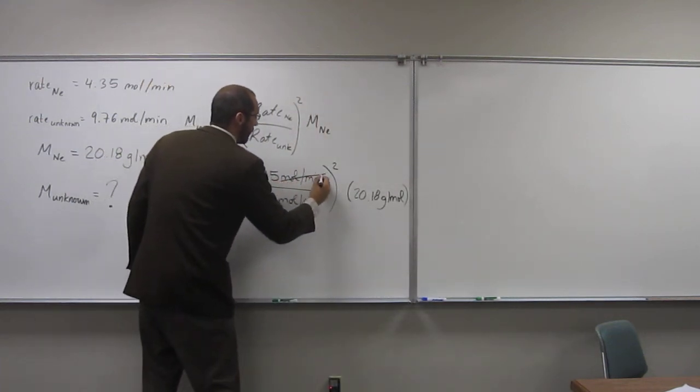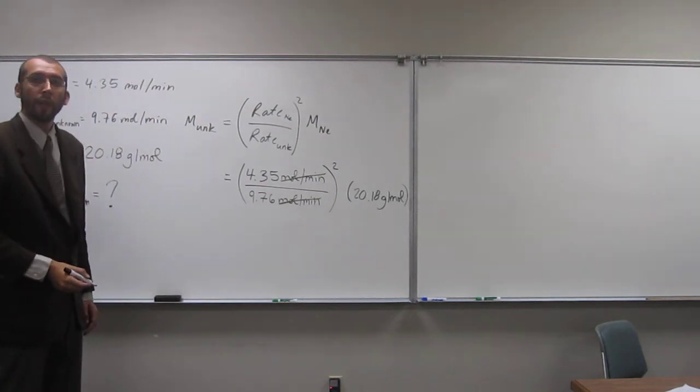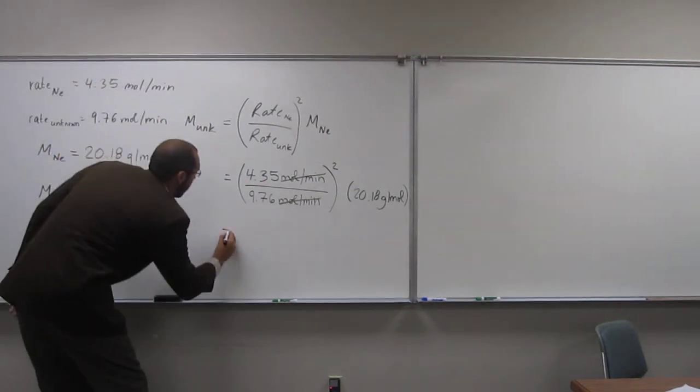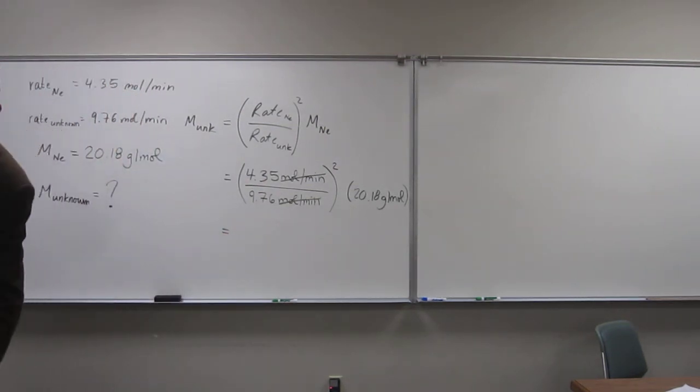We'll square that and multiply it by 20.18 grams per mole. Okay, so hopefully you can see moles per minute cancels there. Is everybody okay with that?